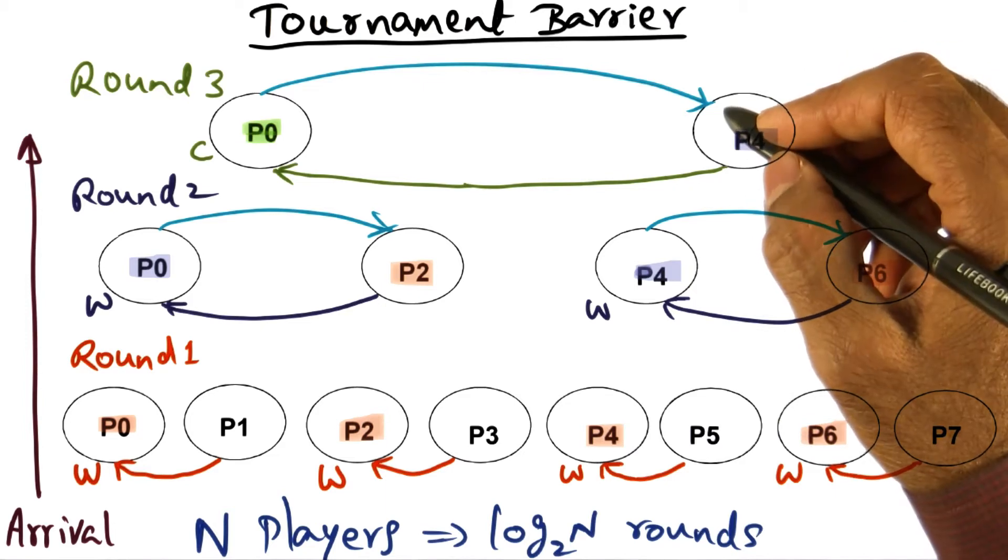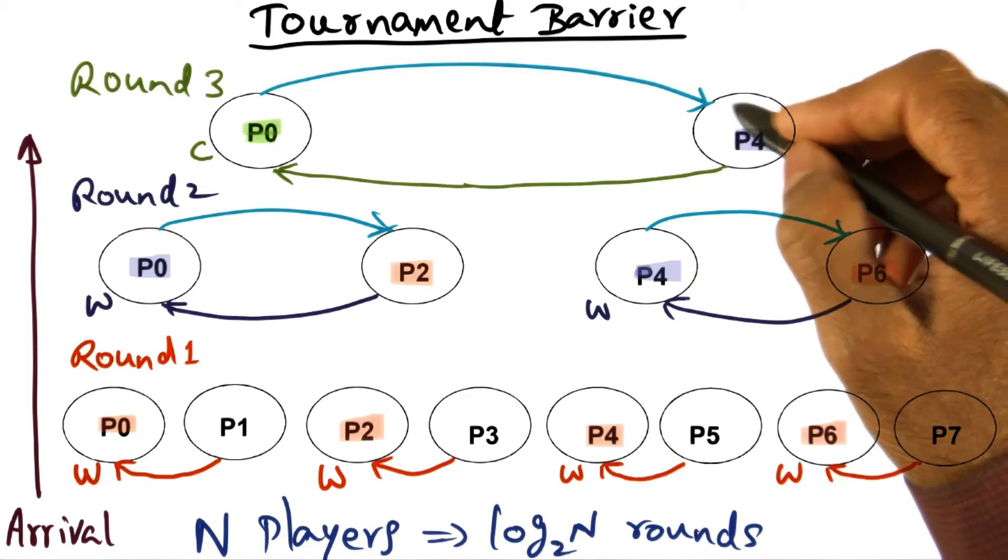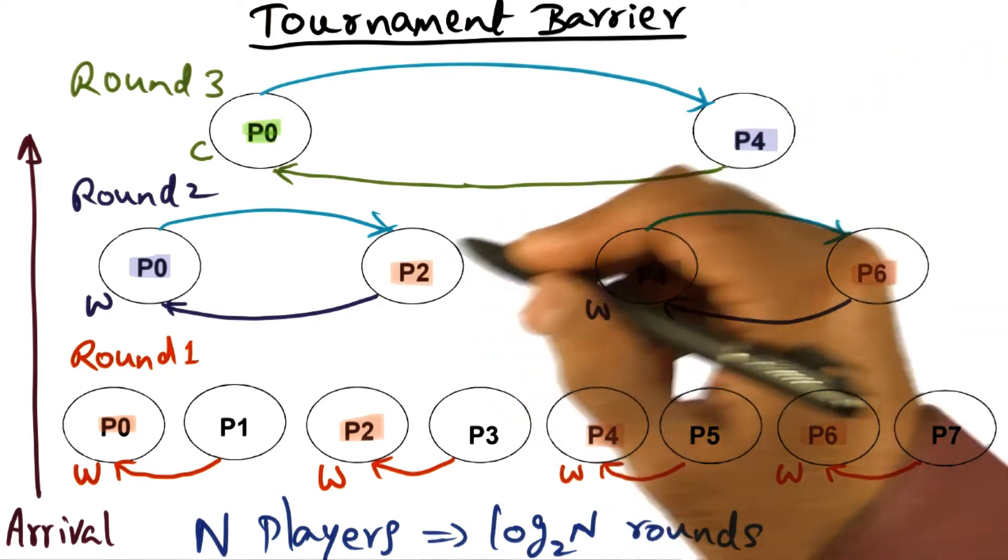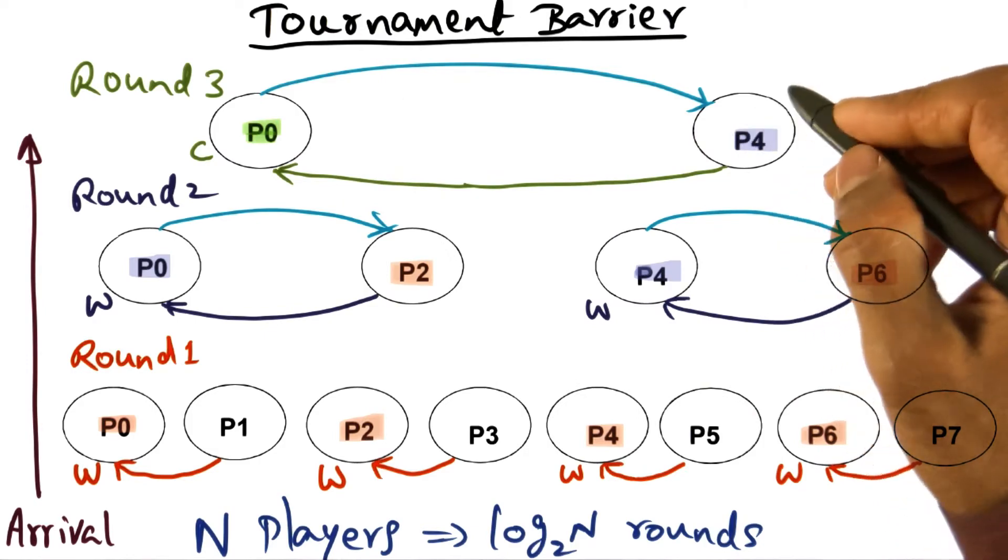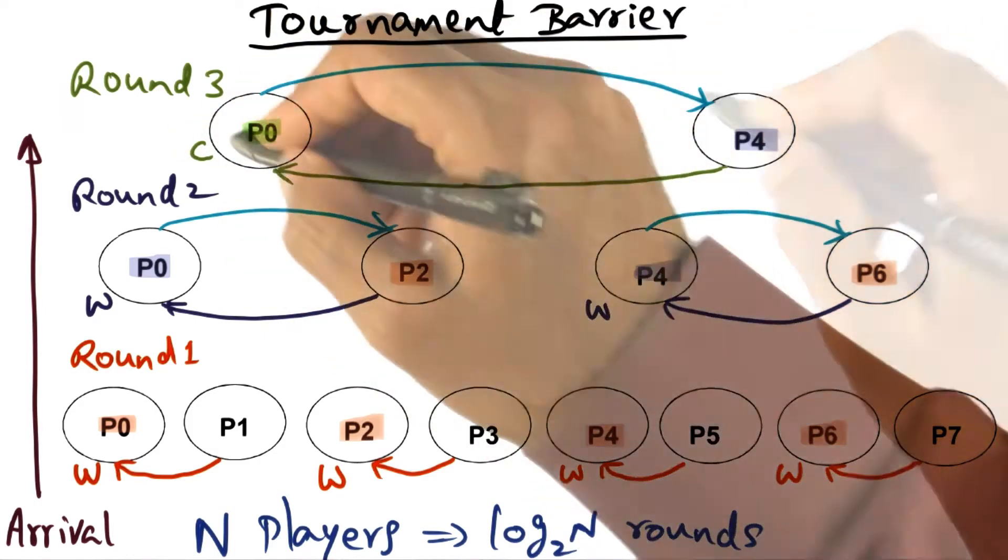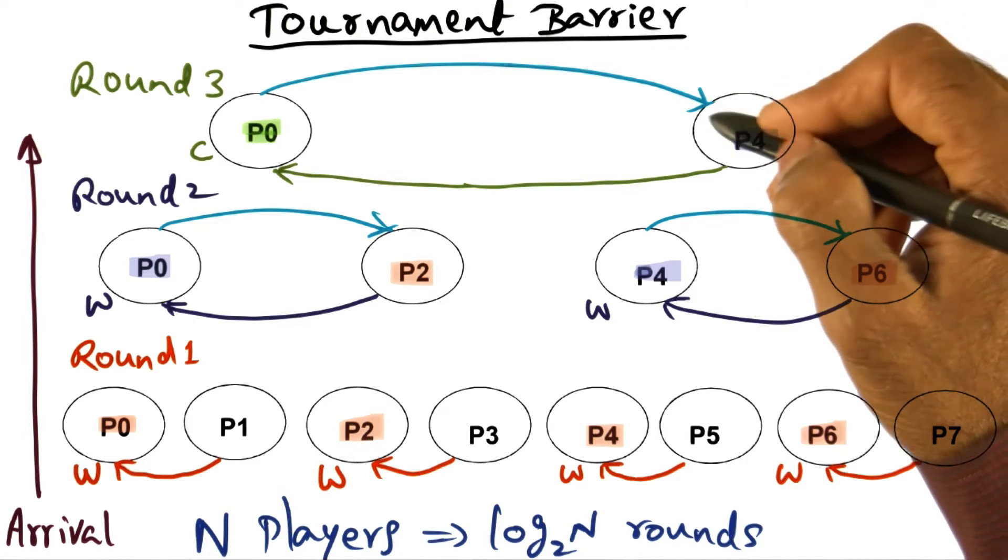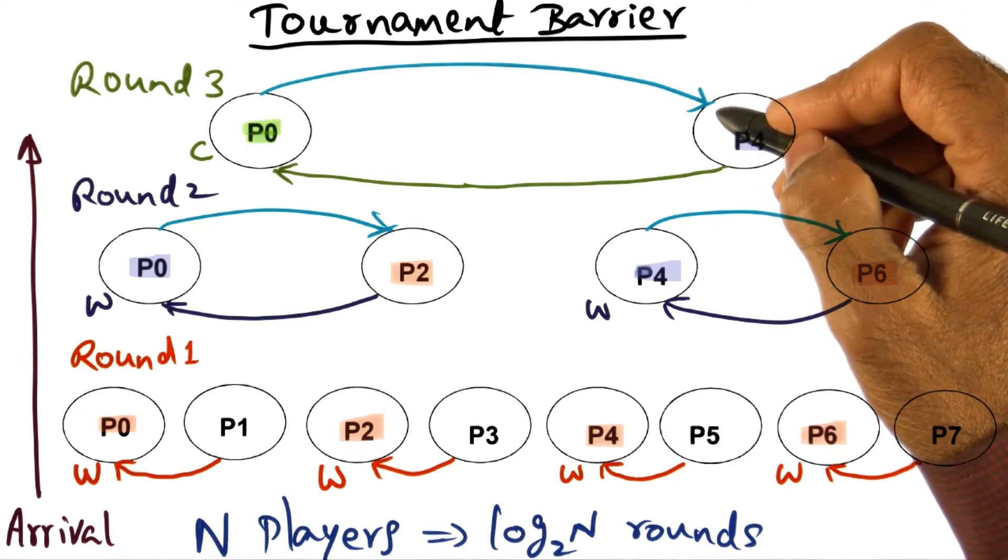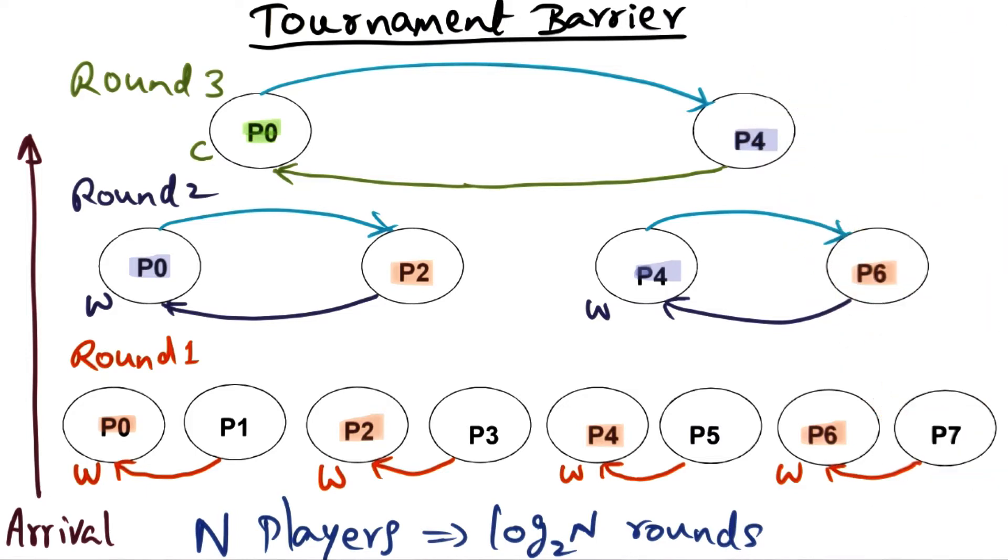Again, what that means from the point of view of a shared memory multiprocessor, is that the spin location for P4, P2, and P6 is all fixed, right? Statically determined. If P4 knows that P0 is going to come over and shake hands, so he can spin on a local variable that is close to its processor.